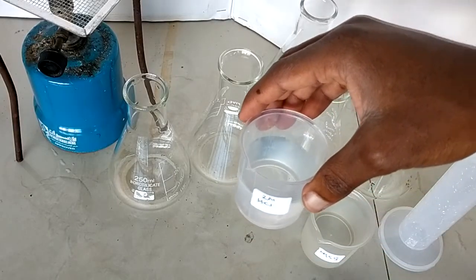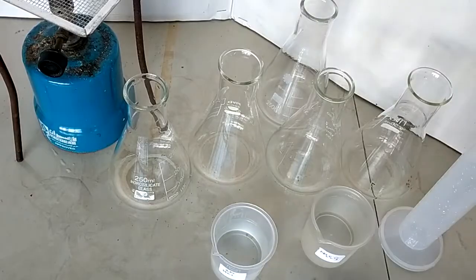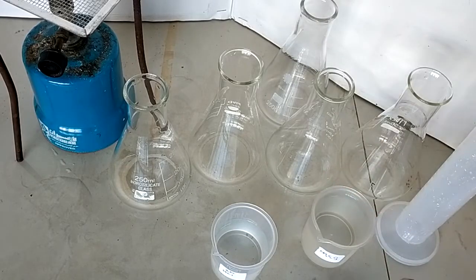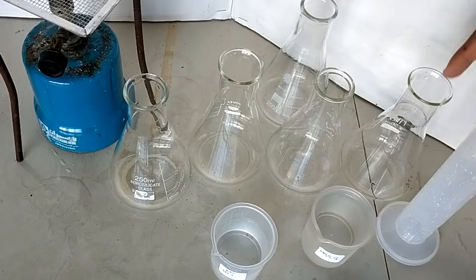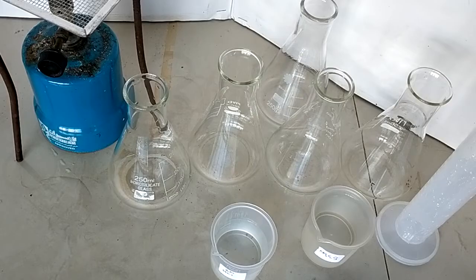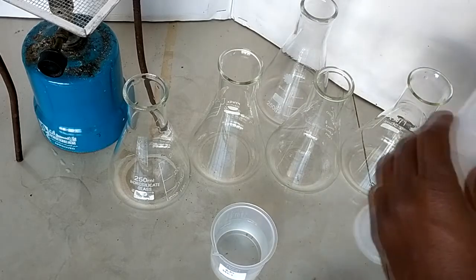So in this one the procedure is simple. You need to measure 30 cubic centimeters of sodium thiosulfate and put it in each of these five conical flasks. So I'm going to do that right away. Measure 30 centimeters cubed.